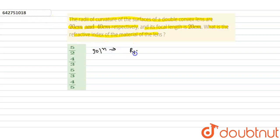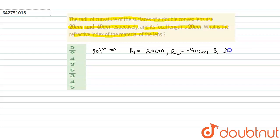So the solution: R1 is given as 20 centimeters, R2 is given as minus 40 centimeters, and f is given as 20 centimeters. We have to find the value of mu.